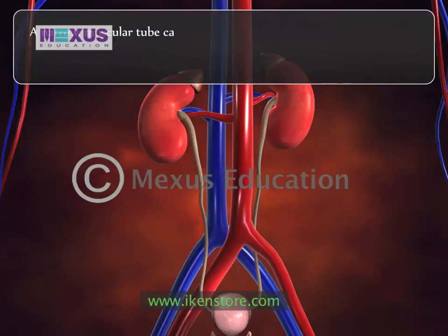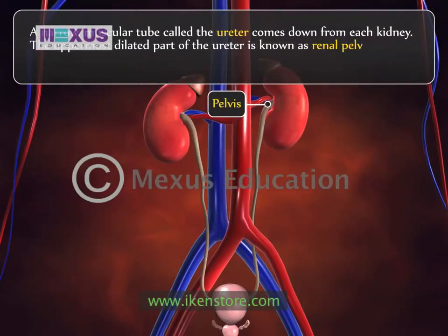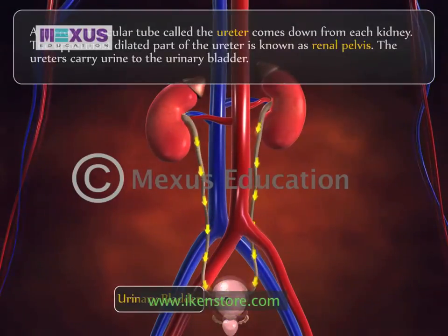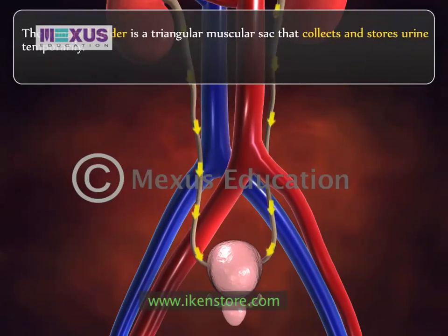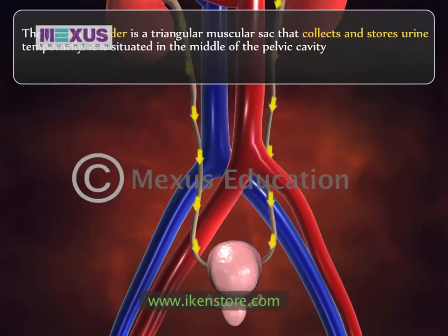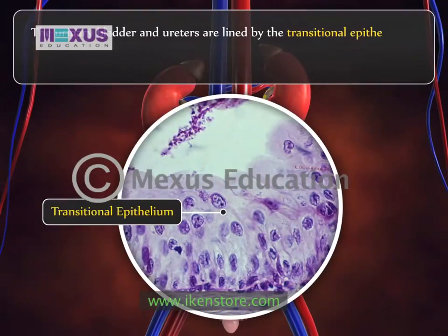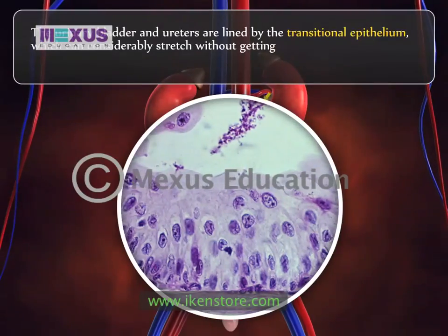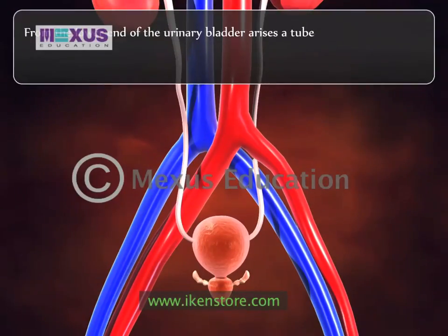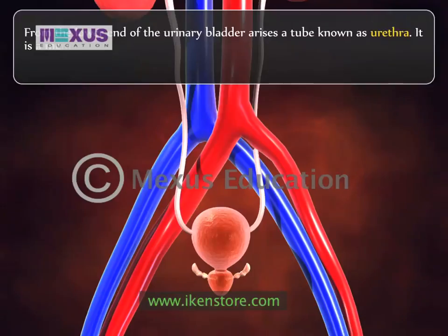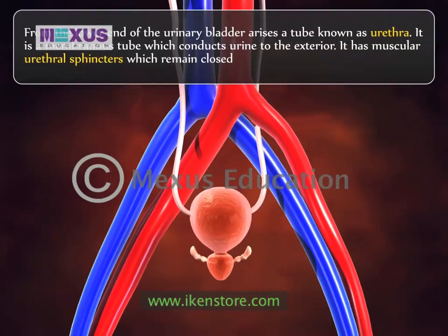A narrow muscular tube called the ureter comes down from each kidney; its uppermost dilated part is known as the renal pelvis. The ureters carry urine to the urinary bladder. The urinary bladder is a triangular muscular sac that collects and stores urine temporarily. It is situated in the middle of the pelvic cavity in the hypogastric region. The urinary bladder and ureters are lined by transitional epithelium, which can stretch considerably without tearing when filled with urine. From the lower end of the urinary bladder arises the urethra, a membranous tube that conducts urine to the exterior. It has muscular urethral sphincters that remain closed except during voiding of urine.